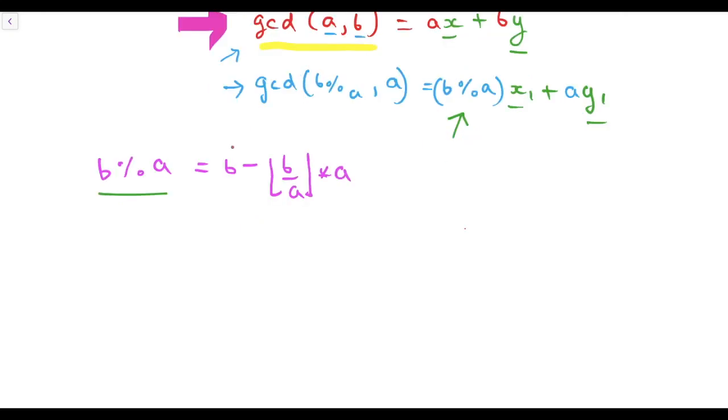Now this equation will become the GCD of B modulo A comma A equals B minus B by A times A times x1 plus A times y1.